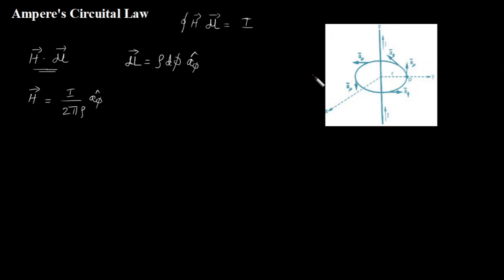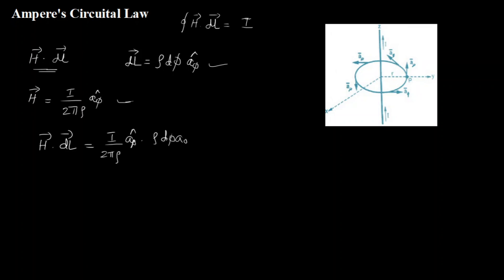In cylindrical coordinate system, the coordinates are ρ, φ, and z, so I represent the distance as ρ. Now I have to compute the dot product H dot dL: that is (I / 2πρ) A_φ cap dotted with ρ dφ A_φ cap. Since A_φ cap dot A_φ cap equals 1 and the ρ terms cancel, I end up with H dot dL equals I / 2π dφ. What I am interested in is the closed line integral of H dot dL, so I integrate this expression: the integral of H dot dL equals the integral of I / 2π dφ. Since current I and 2π are constants, this becomes I / 2π times the closed line integral of dφ.